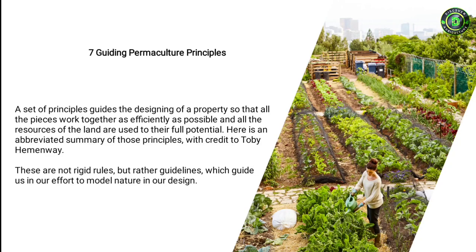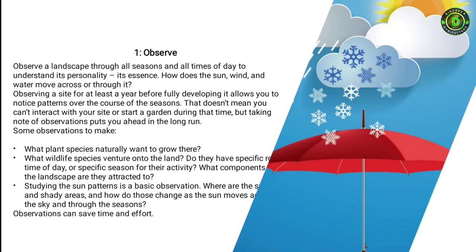Principle one: Observe. Observe a landscape through all seasons and all times of day to understand its personality and essence. How does the sun, wind, and water move across or through it? Observing a site for at least a year before fully developing it allows you to notice patterns over the course of the seasons. That doesn't mean you can't interact with your site or start a garden during that time, but taking note of observations puts you ahead in the long run.